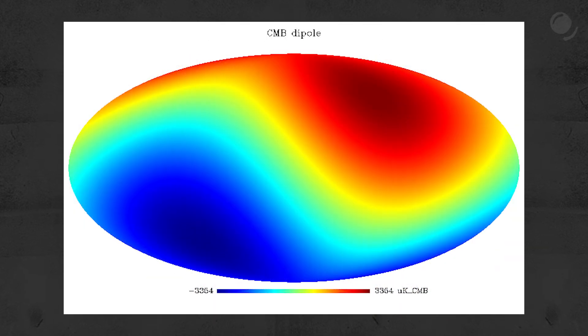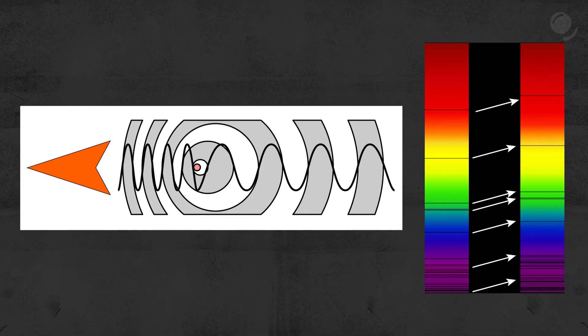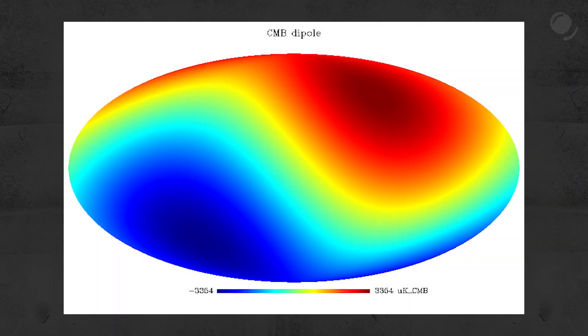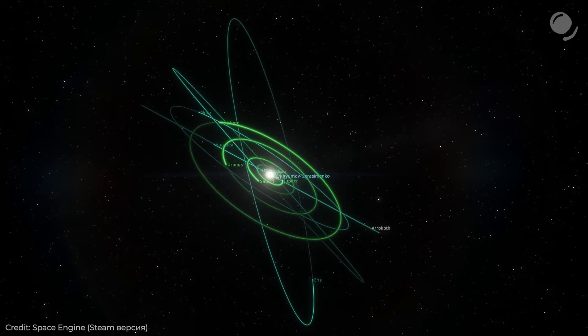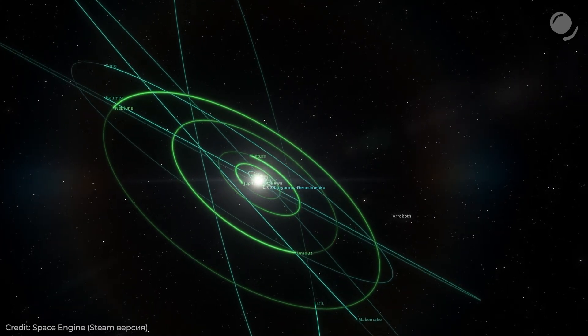The dipole anisotropy map shows that one half of the sky is slightly cooler than the other — the difference is only several millikelvin, but it's still measurable. However, there is no anomaly in the CMB itself; this anisotropy is the result of the Doppler effect. It occurs because our solar system is moving through space relative to the CMB — one half of the microwave sky gets redshifted and the other blueshifted. This dipole anisotropy helped calculate the velocity of the solar system relative to the CMB, which turned out to be about 368 kilometers per second.